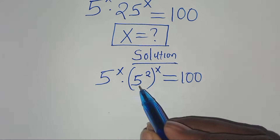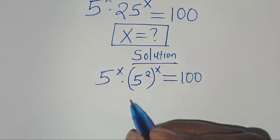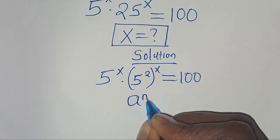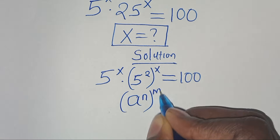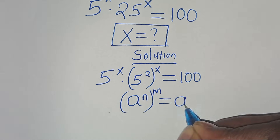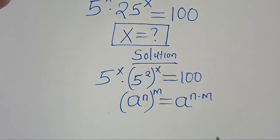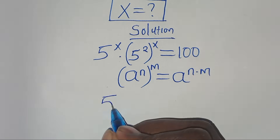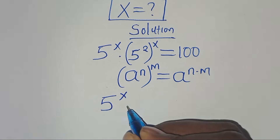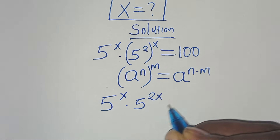5 to the power of 2, raised to the power of x, is in the form of a to the power of n, raised to the power of m, which we can express as a to the power of n times m. So we have 5 to the power of x multiplied by 5 to the power of 2x.